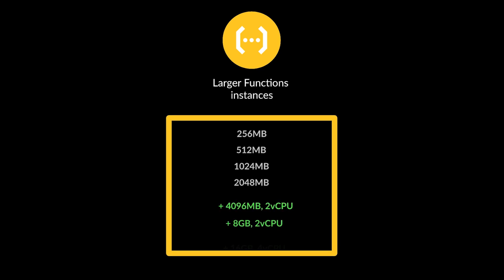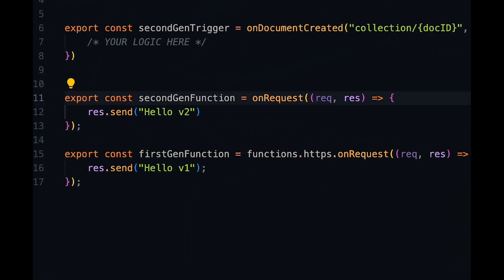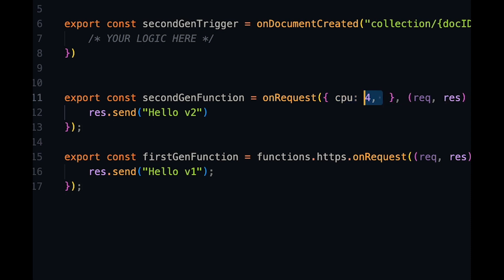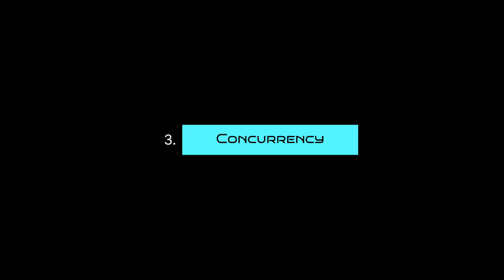Next on the list, our functions have access to more resources that we can allocate in second gen — up to 16 gigabytes of memory and four virtual CPUs instead of two. To configure your functions to use more resources, pass a config object with the cpu property for setting up the virtual CPUs and the memory property for the RAM amount.